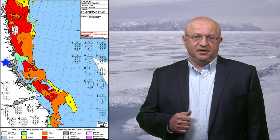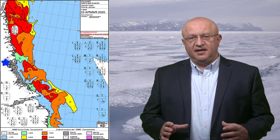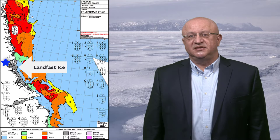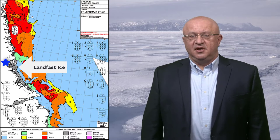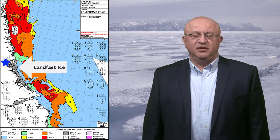Ice first forms in the sheltered bays and inlets of the coast of Labrador and eventually becomes consolidated. The many islands and rocks off the coast act as anchors for that ice, which becomes fastened to the land, and is therefore called land-fast ice. This land-fast ice can extend as far as 60 kilometres from the coast in some places, and is heavily used by coastal communities for travel.